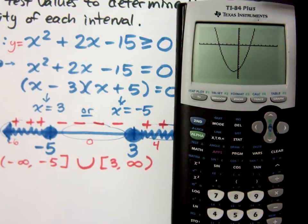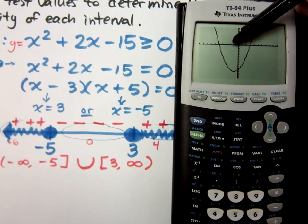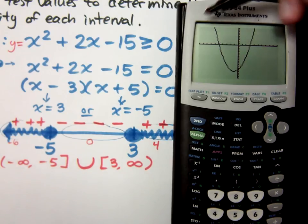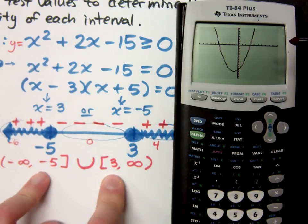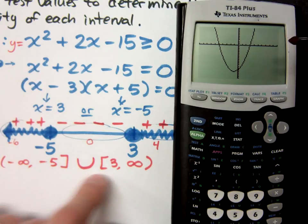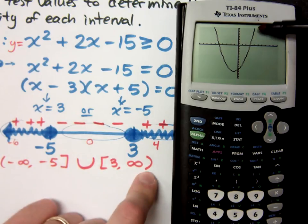Now, you see that this happens at negative 5 and to the left and happens at positive 3 and to the right which is the same thing I have down here. Anything left of negative 5 or greater than 3 is going to be above that.